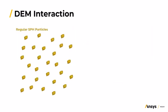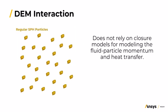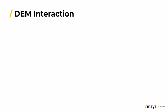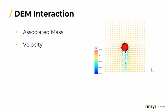When it comes to DEM interaction, ANSYS Rocky SPH does not rely on closure models for modeling the fluid-particle interactions. It skips correlation-based approaches and instead a resolved mass is adopted for the momentum transfer. It does this by placing SPH elements in the interior of each of the DEM particles. Each of these linked elements has an associated mass, and velocity is used to satisfy the no-slip condition at the particle surface.